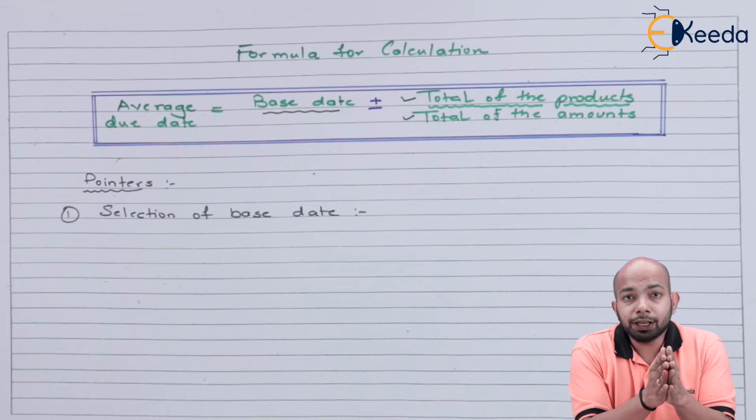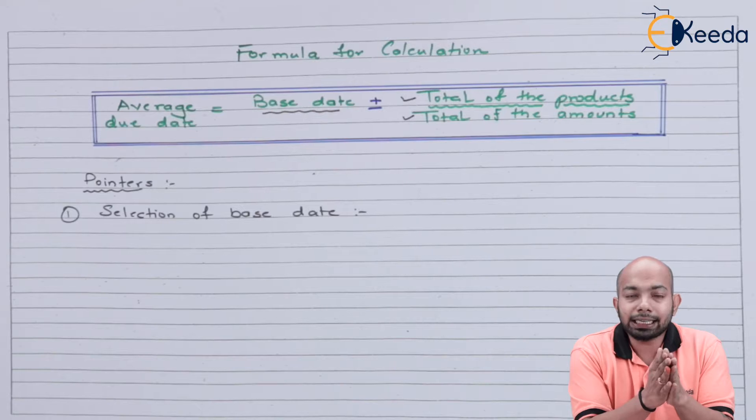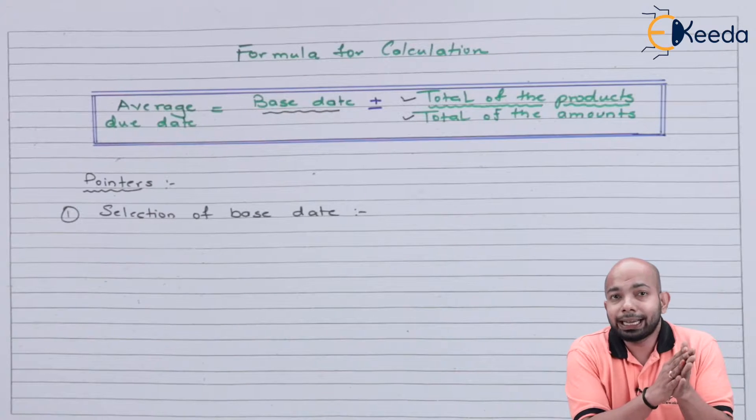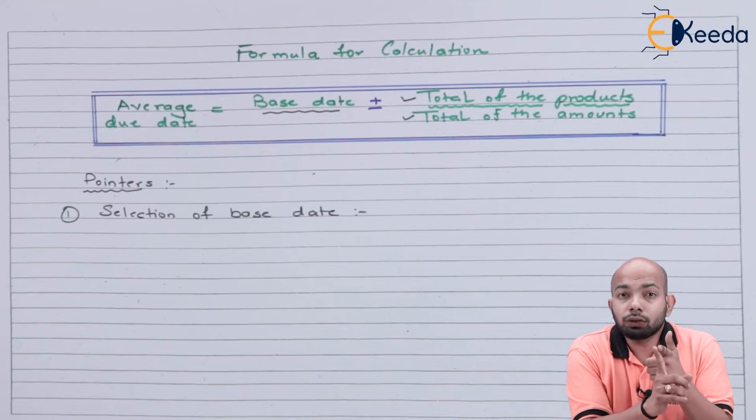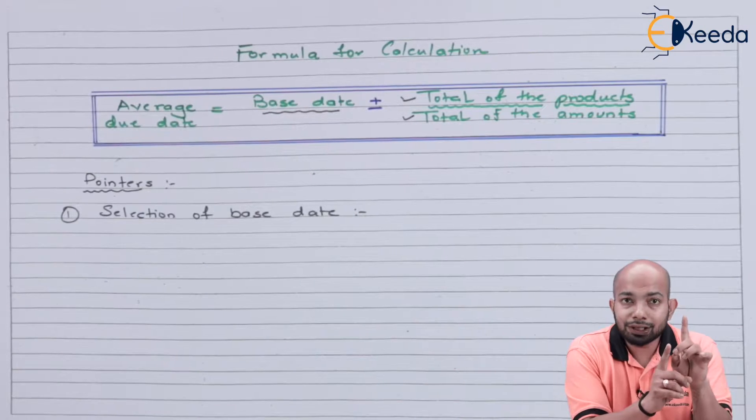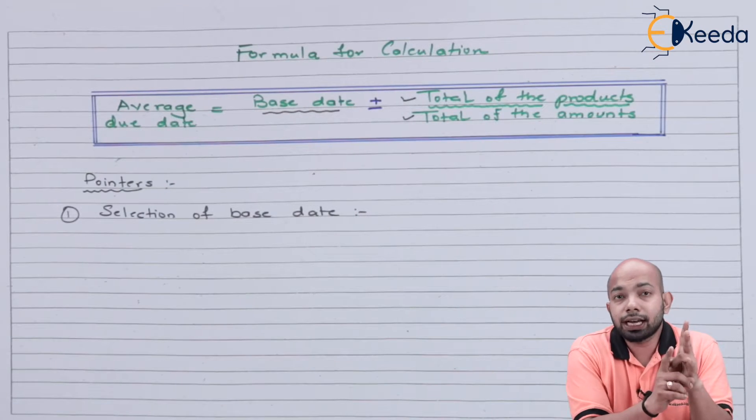The first pointer is selection of the base date. The base date can be any date, but preferably we take the first transaction's due date or the last transaction's due date.